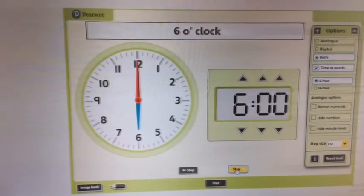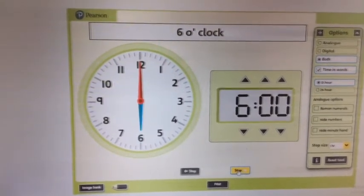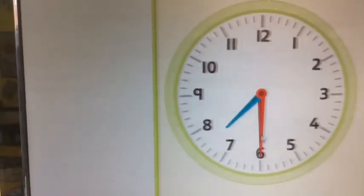Now what about half past? Where does the big hand have to be, the red hand, if it's half past something? Well, it has to cut the clock in half, hasn't it, so it's pointing to the 6.